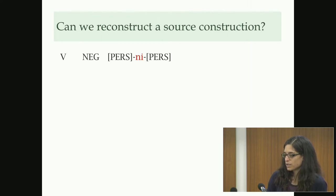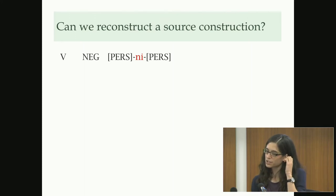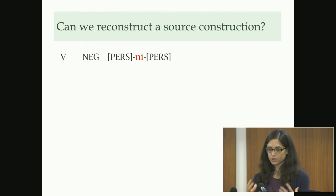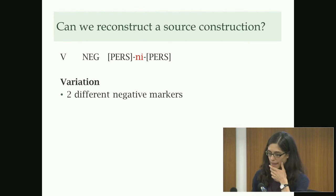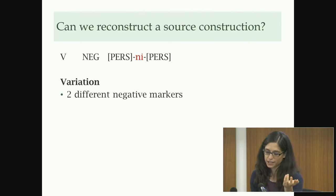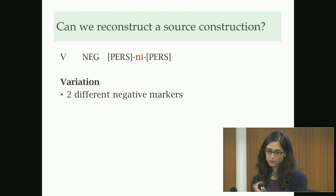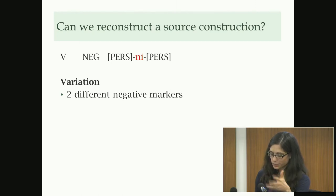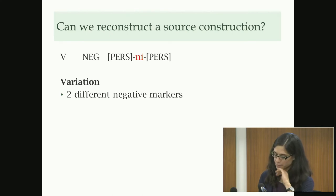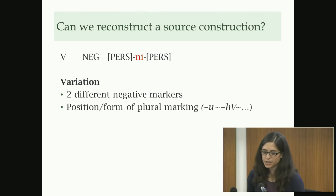The question for this knee construction is whether we can reconstruct a source construction for the negative future knee construction at the level of Proto-Northwestern — whether all modern languages just have an inherited form of it. This hinges on whether the variation can be explained as subsequent changes to one inherited form. Even though it all looks extremely similar compared to affirmative forms, there is still quite a bit of variation.